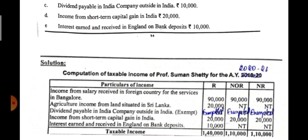Interest earned and received in England — earned also outside India, received also outside India — taxable only in the case of resident only. Show 10,000 in the resident column; in the other two columns it is not taxable, not taxable. Now find out the total. The total is the taxable income. Remember, in income tax you have to show working notes along with your solution.